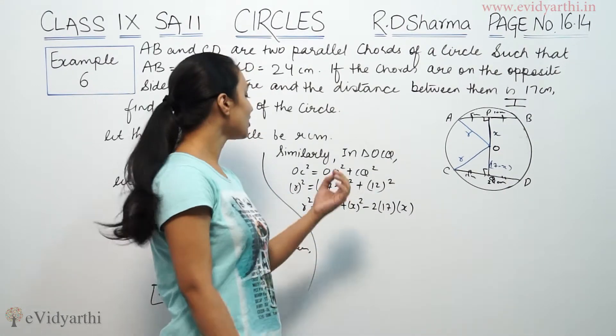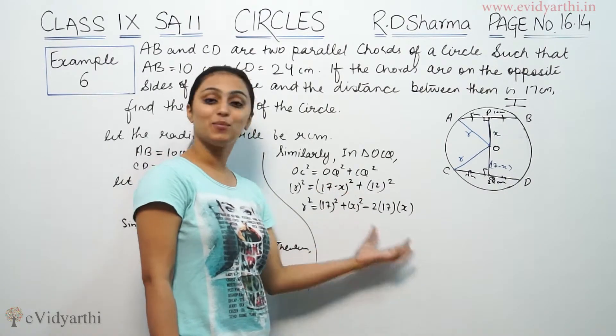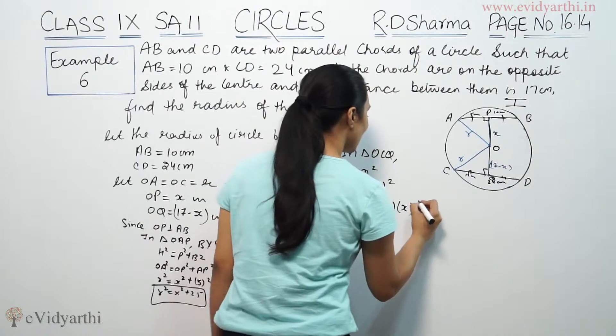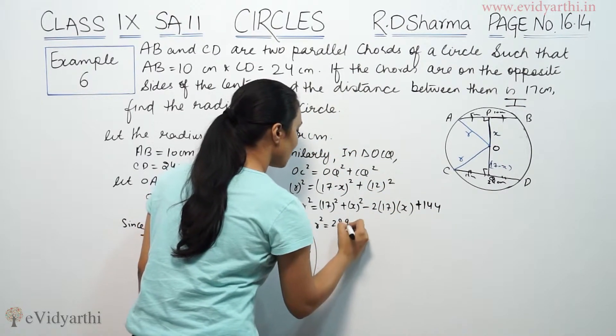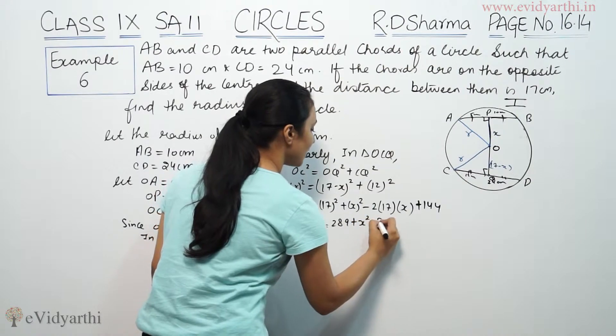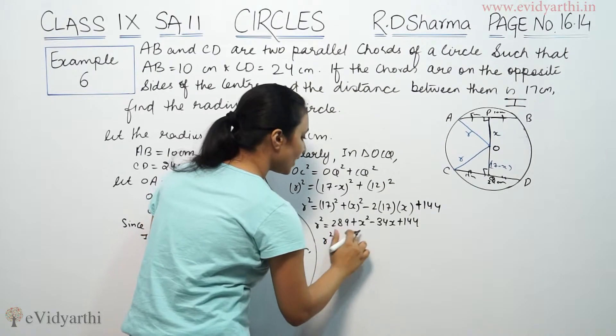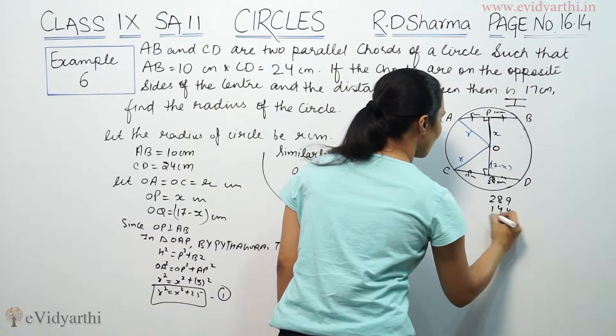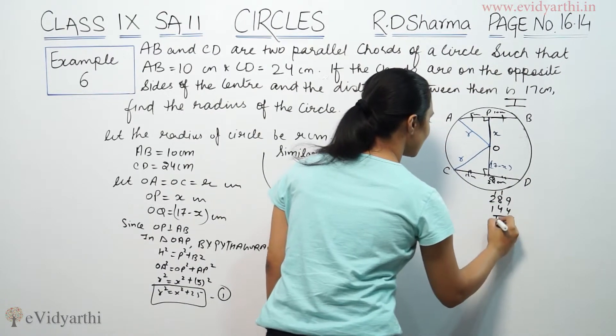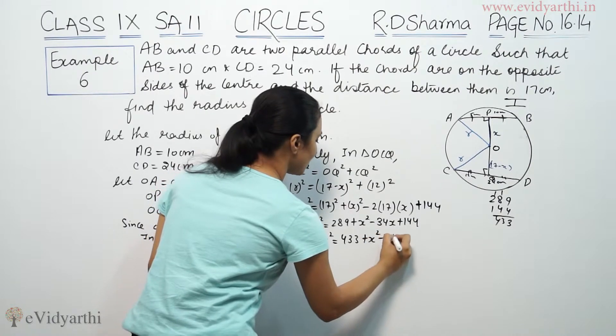Plus 12 square is 144. So 17 square is 289 plus x square minus 34x plus 144. This will be r square equals 289 plus 144—289 plus 144 is 433 plus x square minus 34x.